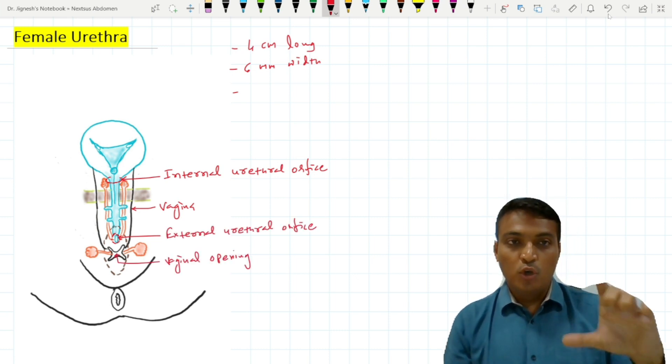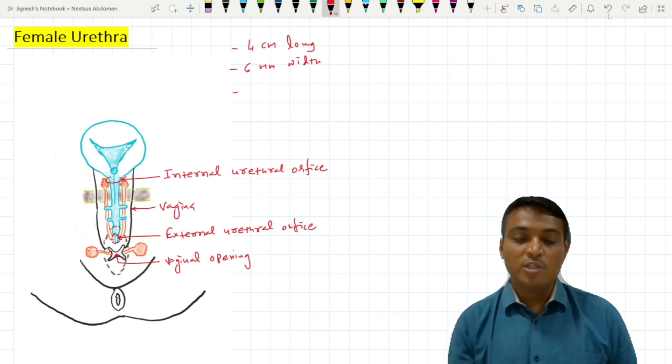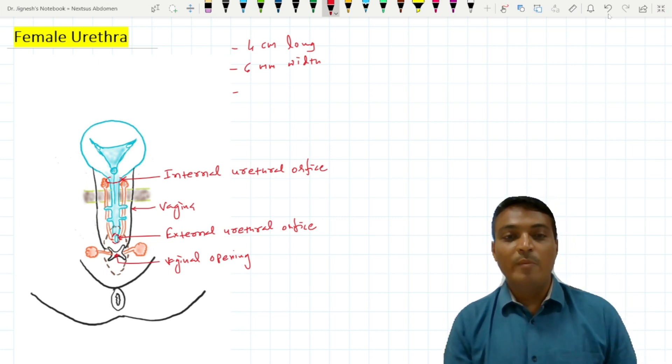The short course of the female urethra is responsible for frequent infections of the urinary bladder in females. Bacteria or infectious material can easily travel up to the urinary bladder through this very short female urethra.